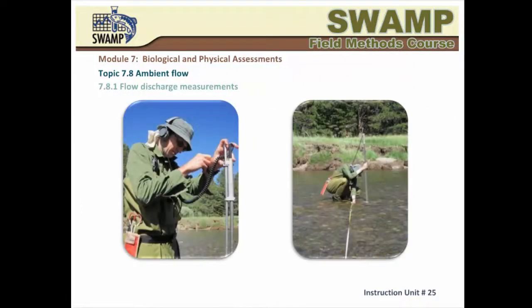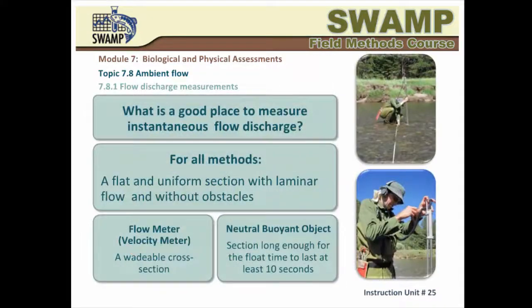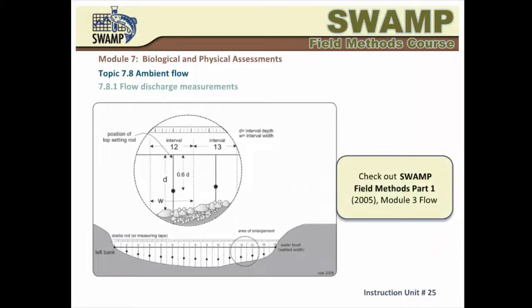The flow regime has a profound influence on aquatic life communities in streams, and flow data are essential for interpretation of biological data. It is extremely advantageous to locate your reach near a gauging station that provides continuous discharge data, but you still need to measure the ambient or instantaneous flow discharge at the time of your sampling and assessment activities. If you have a flow meter, which is the preferred method, you will easily find a suitable cross-section, but you will probably need a length of several meters if you are using the neutral buoyant object method. Please read Module 3 of the SWAMP Field Methods, Part 1, for further detail and demonstration videos on the use of the velocity area method and the buoyant object method.